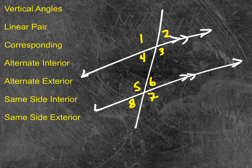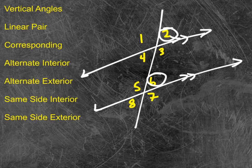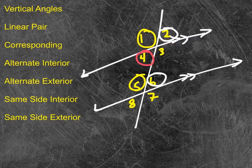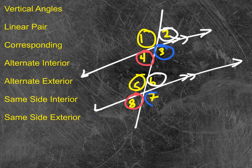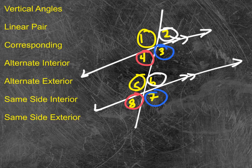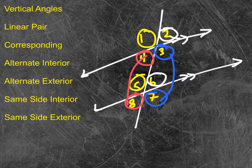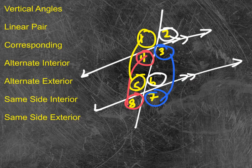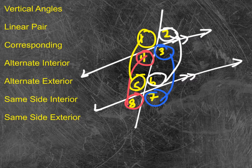Corresponding angles, let's look at those. That would be 2 and 6, it would be 1 and 5, it would be 4 and 8, and it would be 3 and 7. Corresponding angles connect to each other, basically slide into the same position in the other pairing of 4, so they are in the exact same position, but in the other pairing of 4. They correspond to each other.